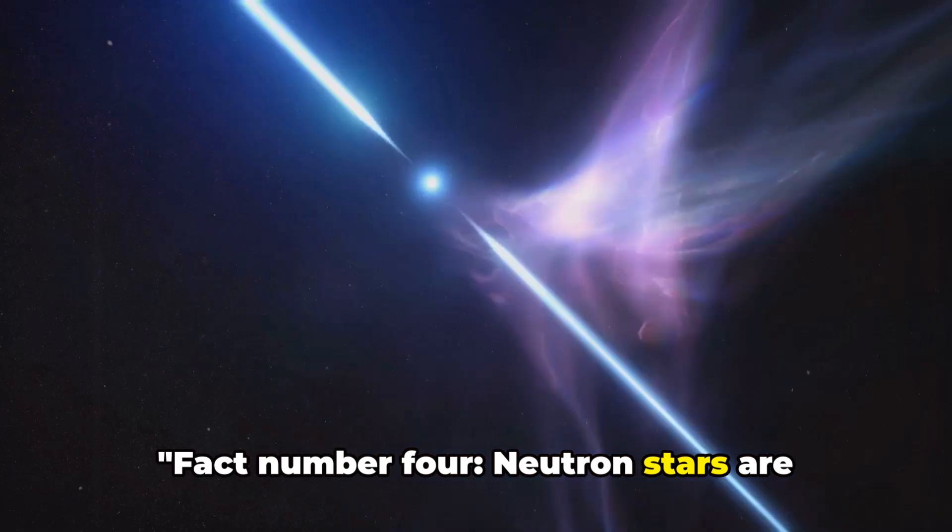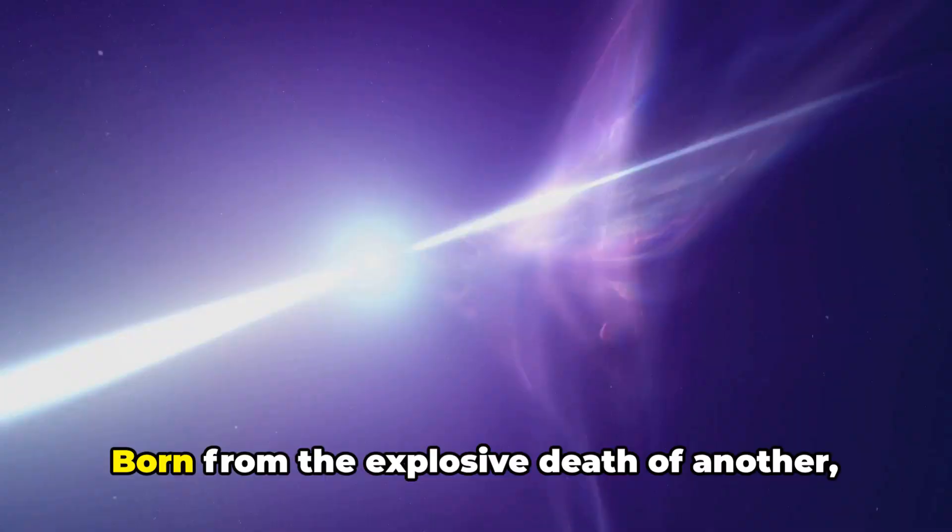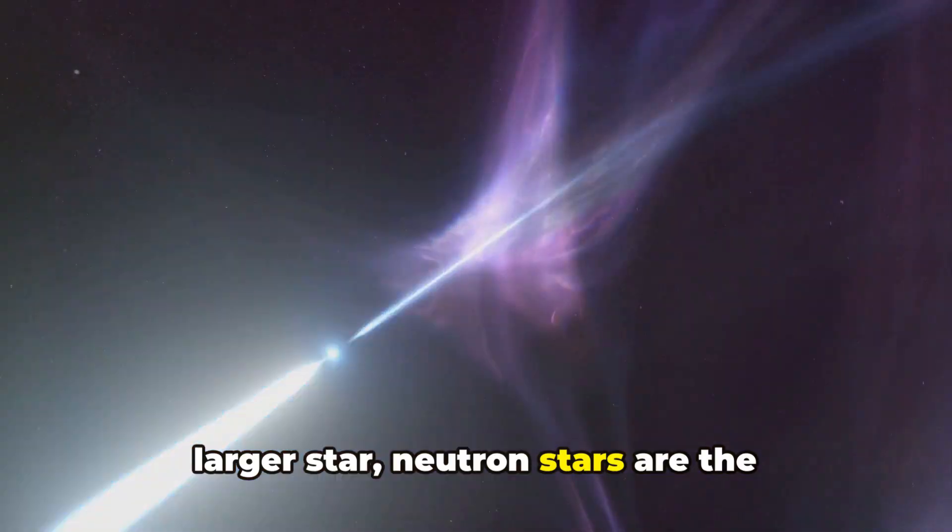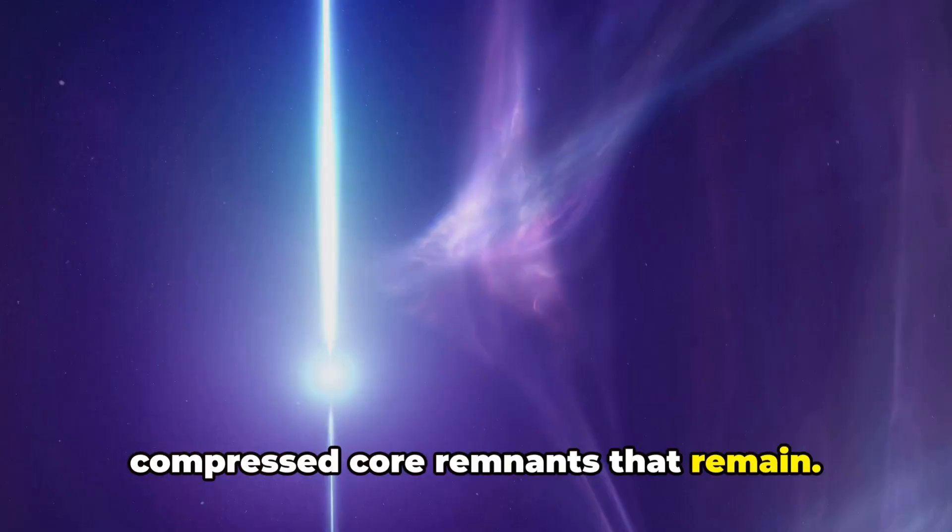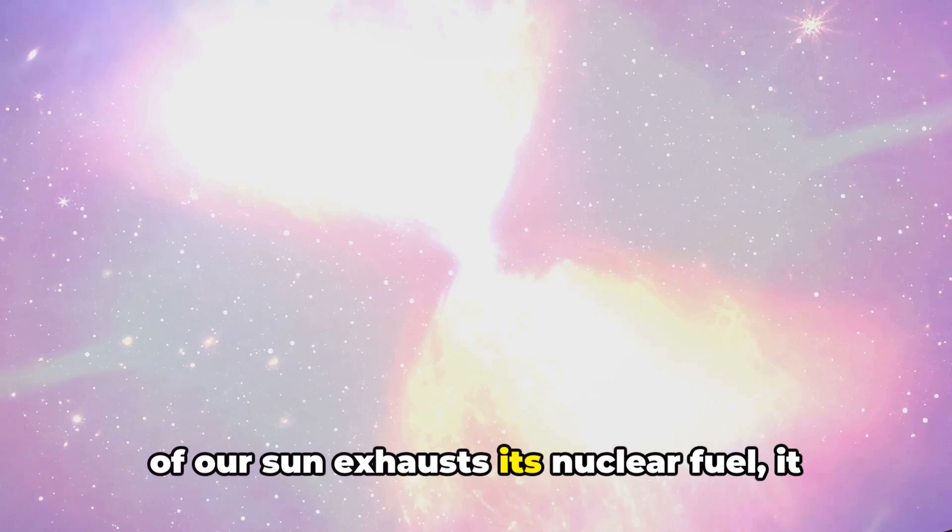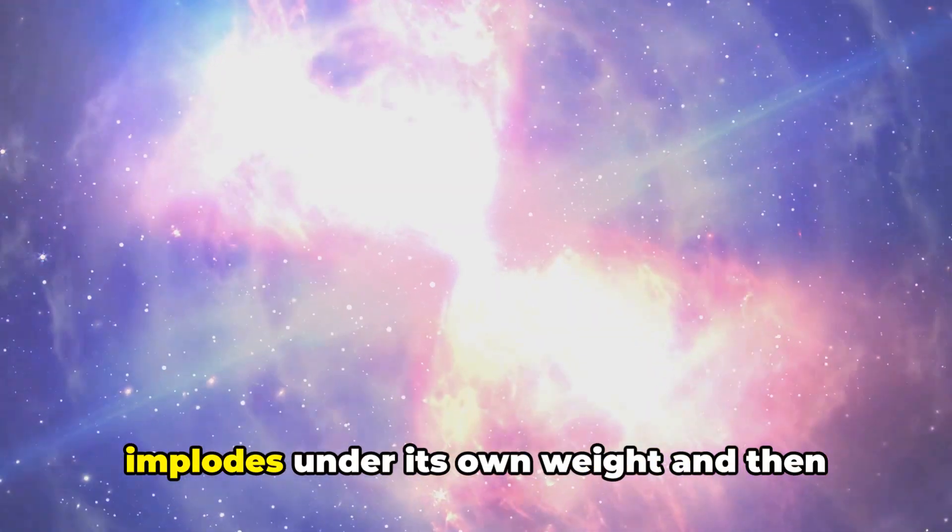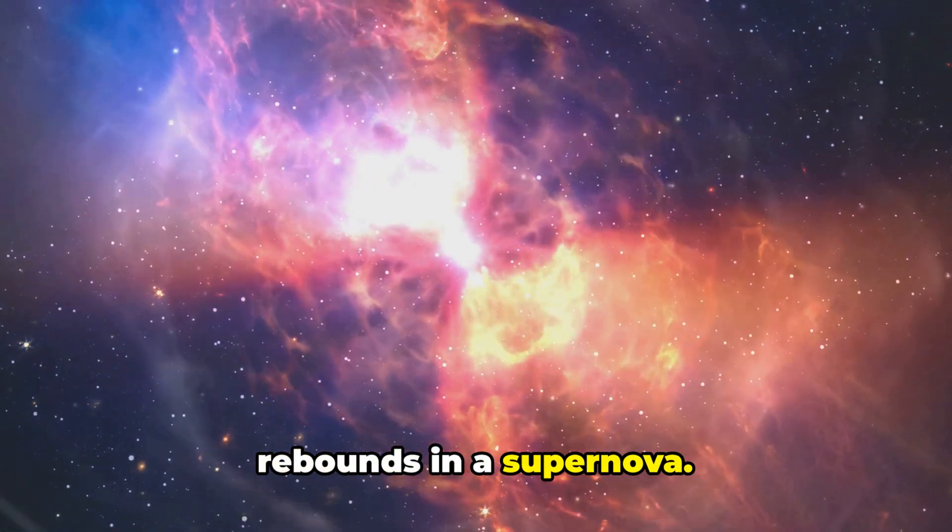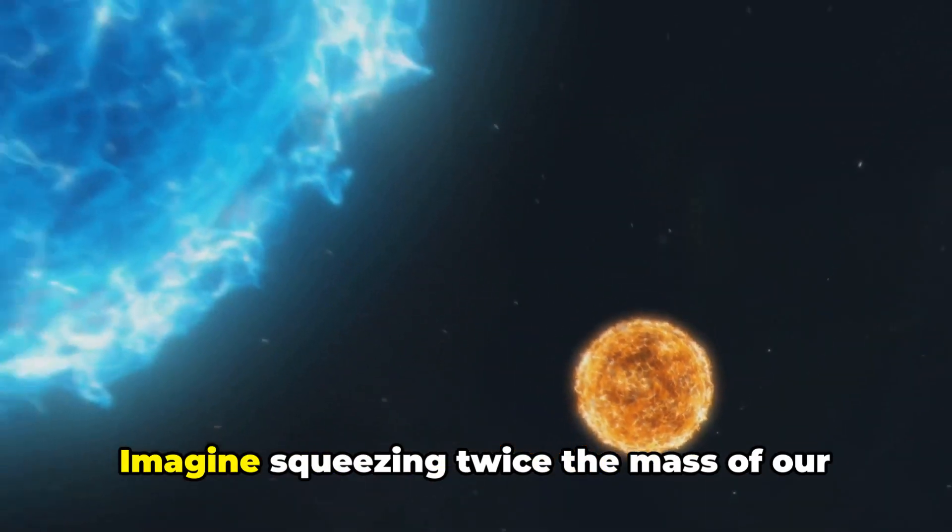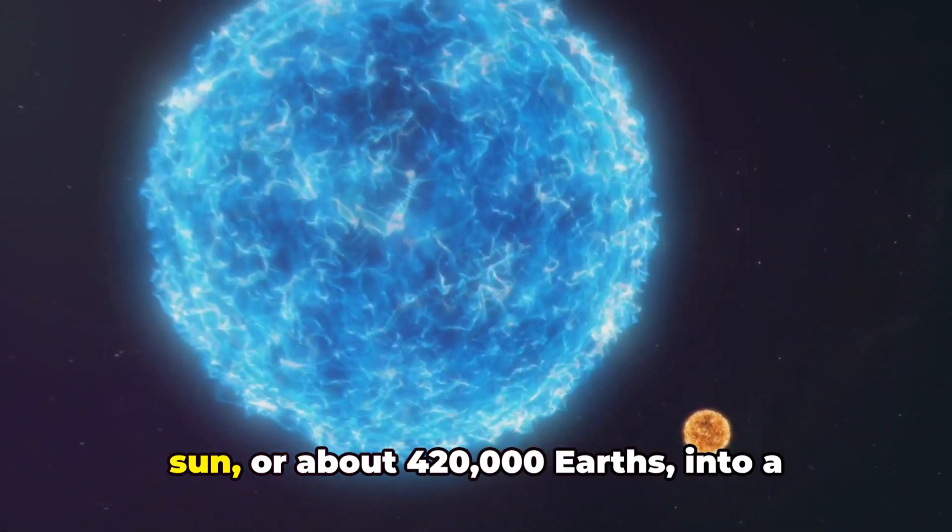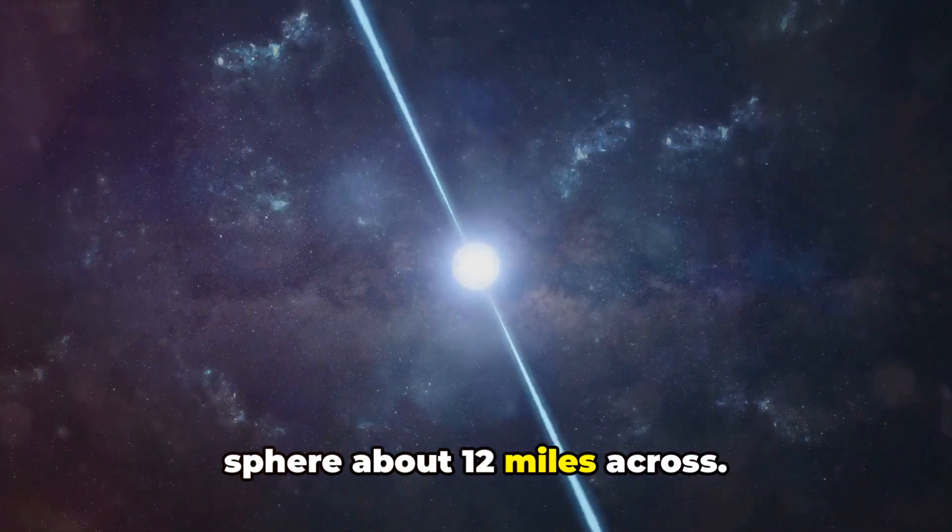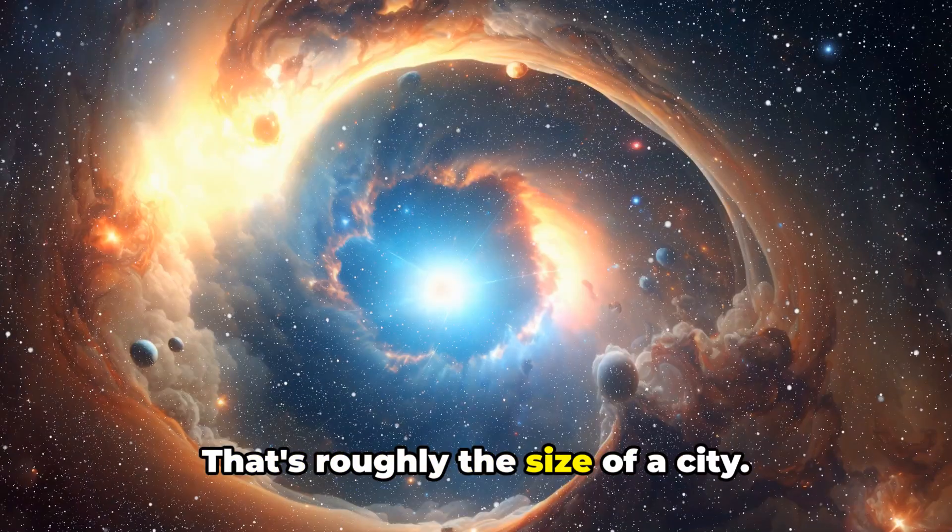Fact number 4, neutron stars are incredibly dense. Born from the explosive death of another, larger star, neutron stars are the compressed core remnants that remain. When a star at least eight times the mass of our sun exhausts its nuclear fuel, it implodes under its own weight and then rebounds in a supernova. What's left over is a neutron star. Imagine squeezing twice the mass of our sun, or about 420,000 Earths, into a sphere about 12 miles across. That's roughly the size of a city.